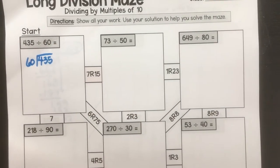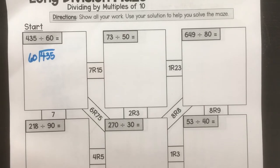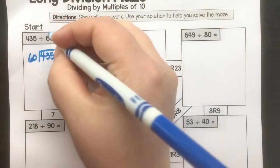So we're thinking to ourselves how many 60s are in 435. Or you could also think how many 6s are in 43. Think about that. What do I know? How many 6s are in 43 without going over?